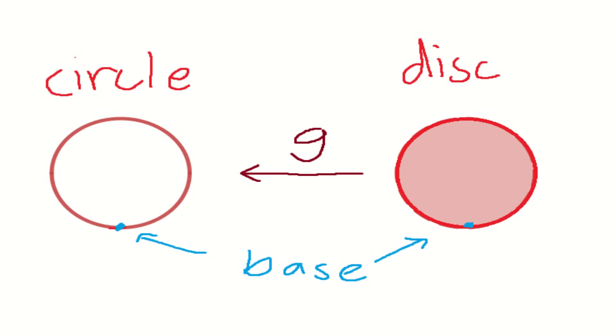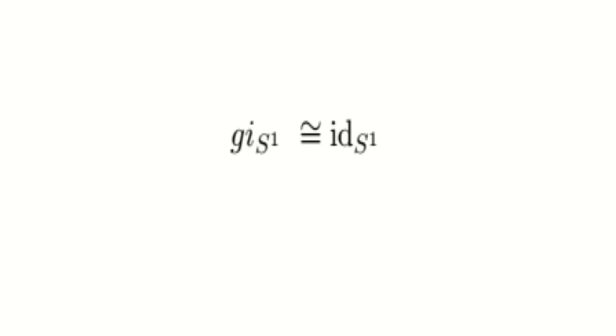Obviously, when we compose the inclusion function of the circle with G, we have the identity on the circle, and when we compose G with the identity on the disk, we are given G again. But as we have shown previously, G is homotopic to the disk's identity function.